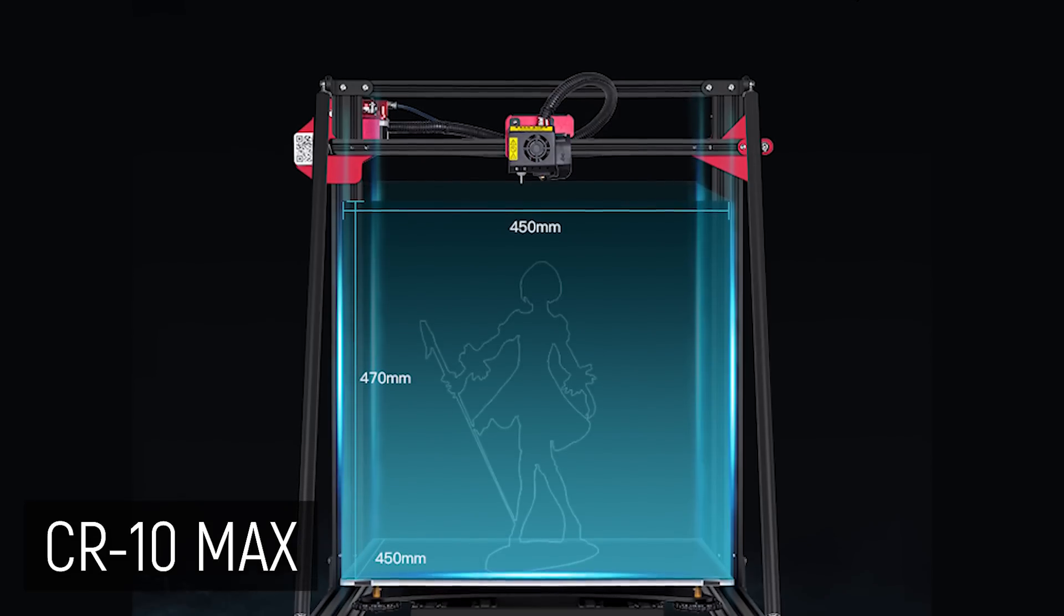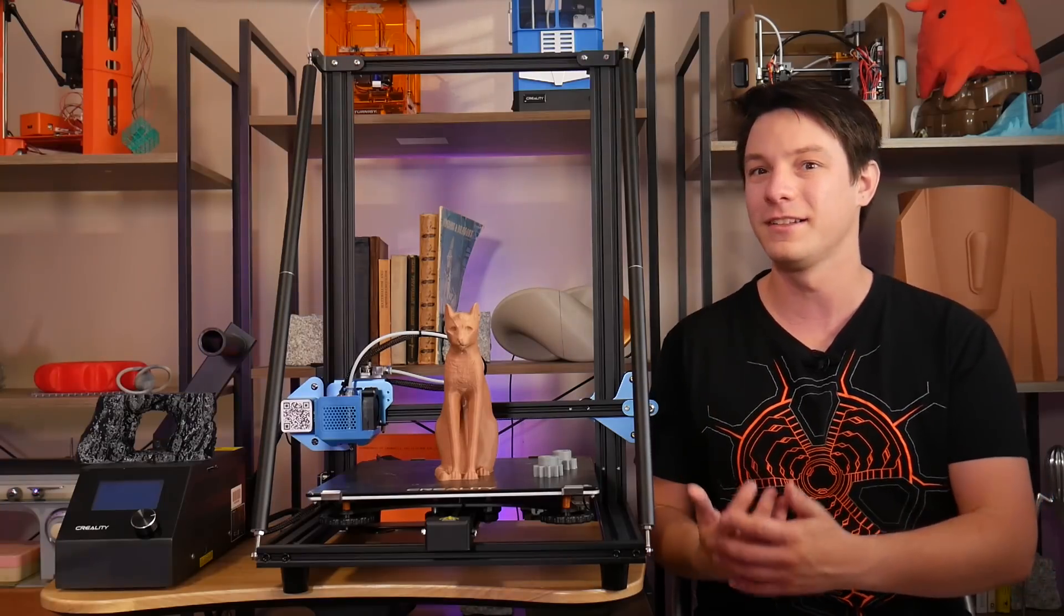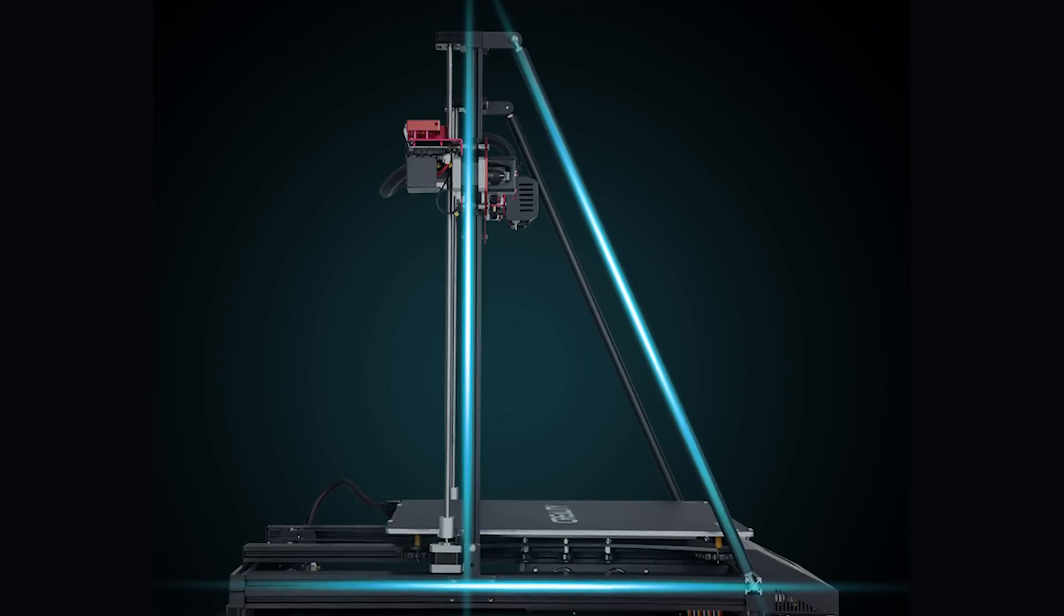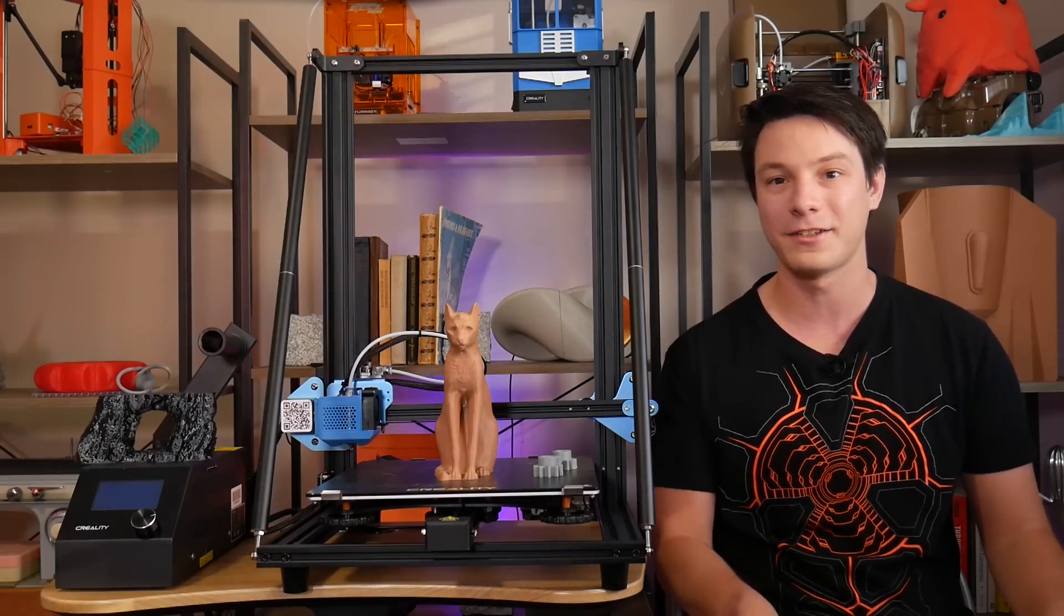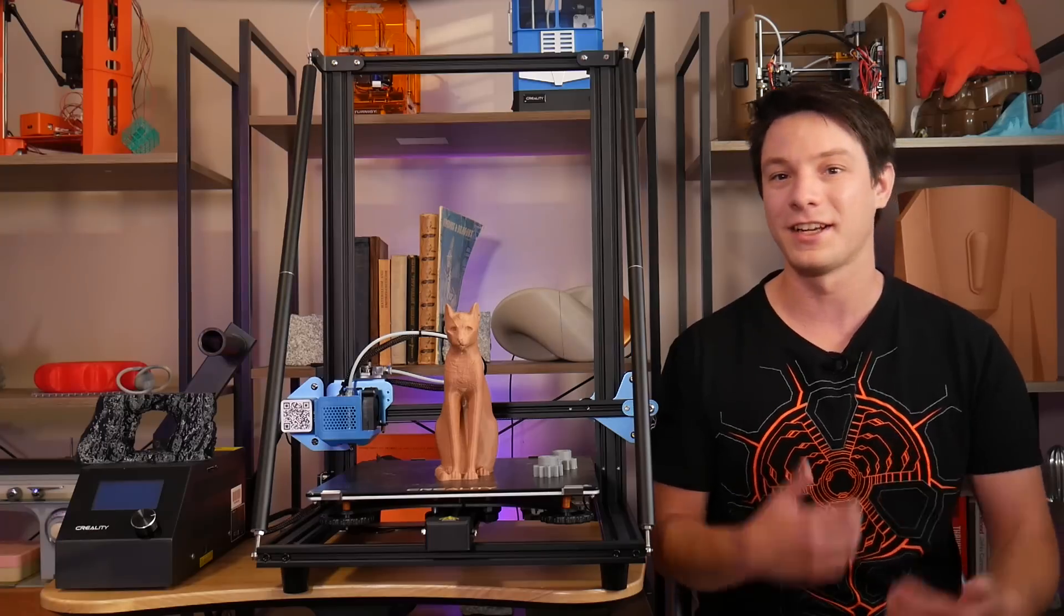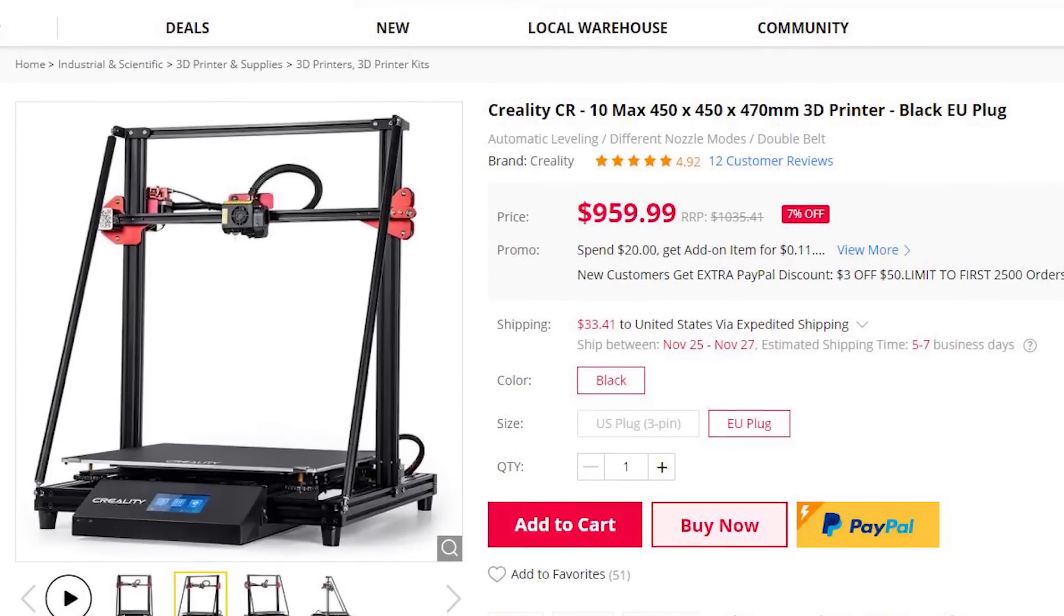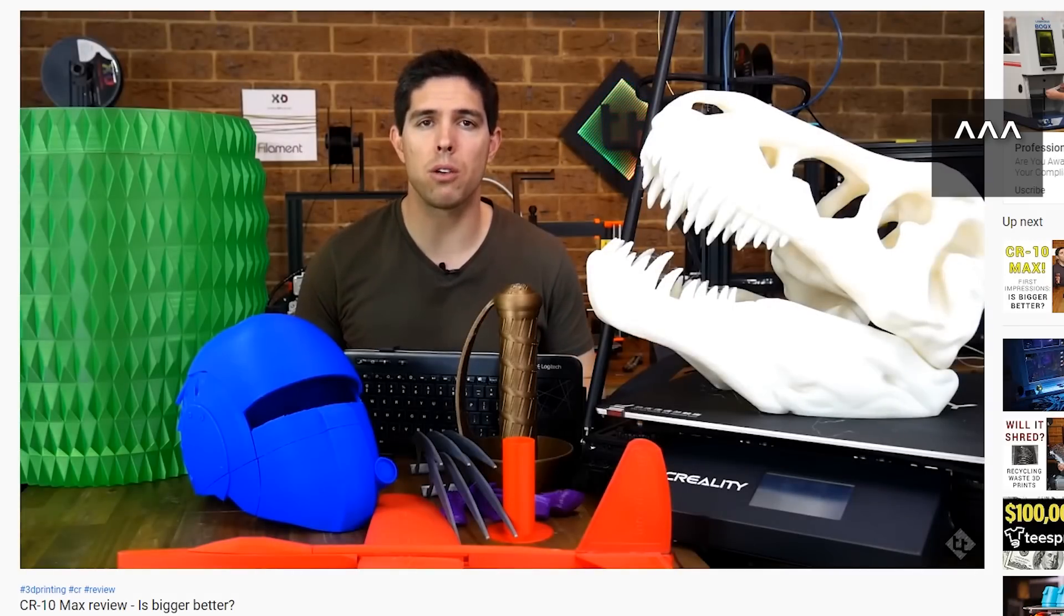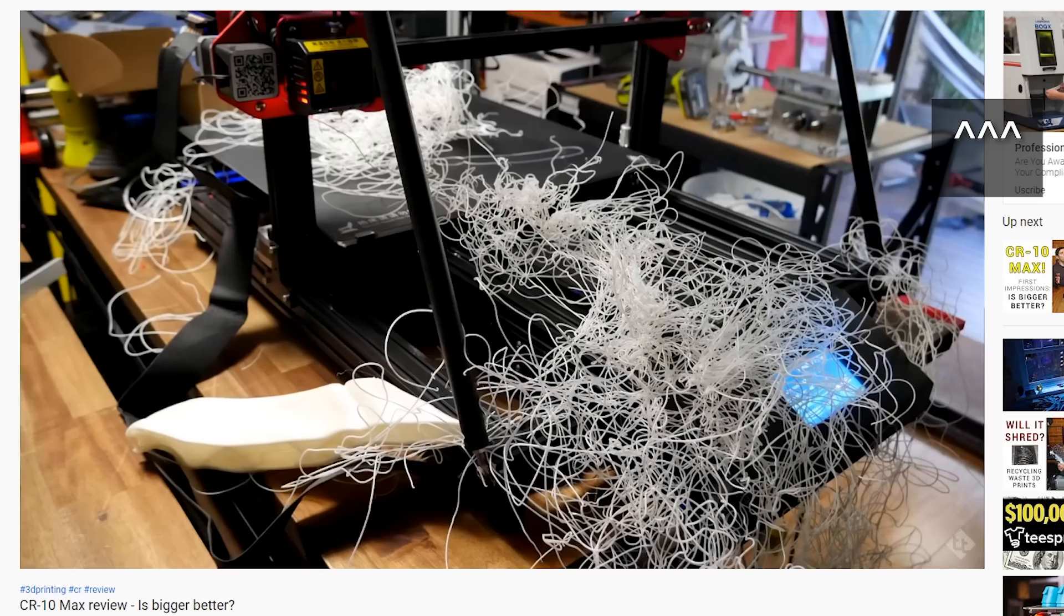Another machine Creality released recently is the CR-10 Max, so how does that differ to this? Well, I don't have one on hand, but the mechanical design looks quite similar with the bracing, just with a larger print volume and a BL touch from factory, and it also has a color touchscreen interface which I would have much preferred over this, but it also is a lot more expensive. Michael from Teaching Tech has a great review and a few update videos on his experience with the CR-10 Max, so if you want to compare the two, you can go check out his video here.